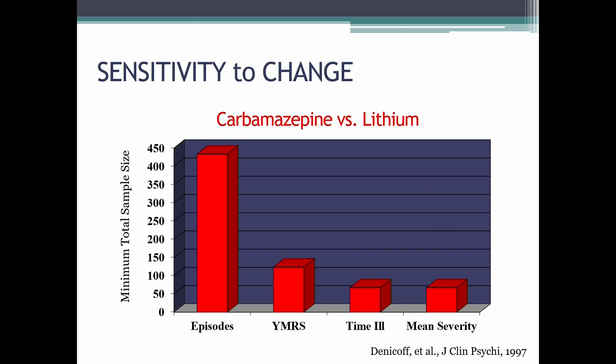If you go with time ill or mean severity, you could get down to around 60 or 70 people for the study — so the choice of measure makes a big difference. The problem, of course, is that in some cases you actually want to look at something like episodes. Maybe that's really your interest — you don't care about what individual days add up to for severity. So the context of your study is important. Even if you need 400 people, it may be necessary because that's the measure that fits your construct best.